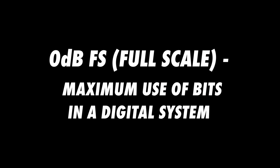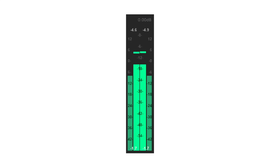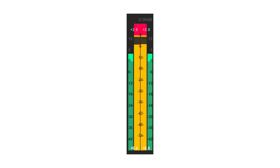0 dBFS, or full-scale, refers to the maximum amount of bits in a digital system. The highest level possible in a digital audio system is 0 dBFS. If a digital audio signal exceeds 0 dB full-scale, digital clipping will occur. Thus, digital audio levels are negative numbers. Minus 12 dB full-scale is 12 dB lower than the maximum level possible in that digital system.